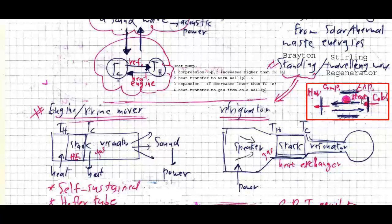The next step is isentropic expansion, which leads to a decrease in temperature and pressure of the gas. The device should be designed so that the temperature of the gas after expansion becomes smaller than the temperature of the cold side, causing heat to flow from the cold reservoir toward the gas. Successive compression and expansion of the wave inside the stack conveys heat from the cold reservoir toward the hot reservoir.